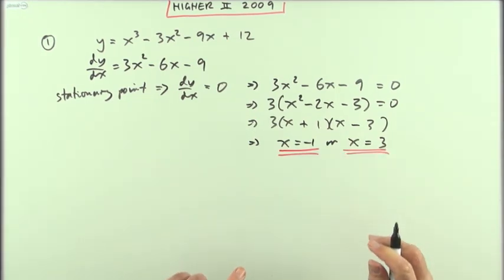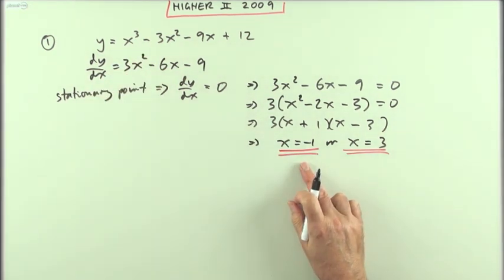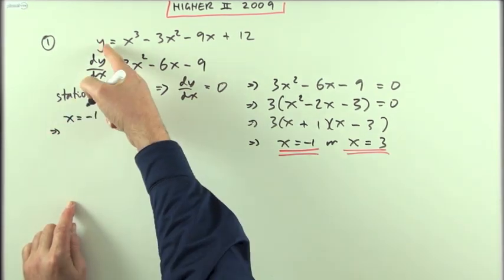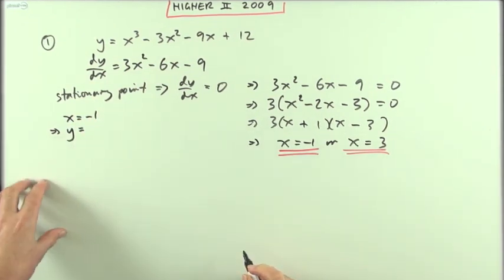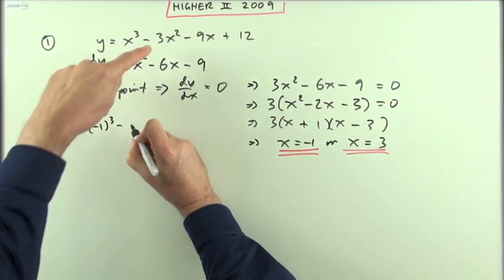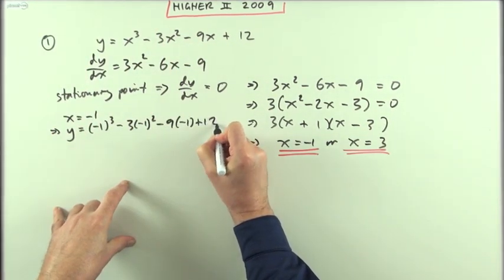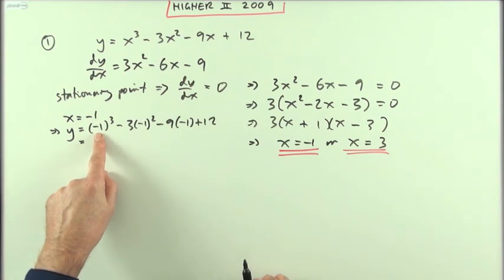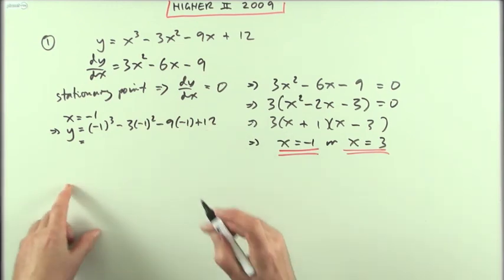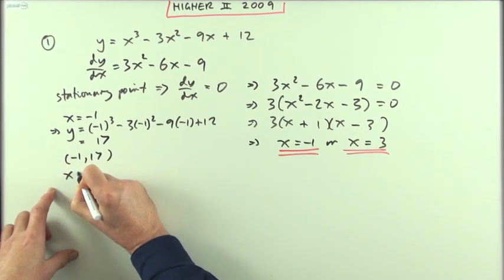It did say the stationary points, not just the x-coordinates, so I'll have to put those back into the equation to find the corresponding y-coordinates. If x = −1, using the original equation: (−1)³ − 3(−1)² − 9(−1) + 12 = −1 − 3 + 9 + 12 = 17. So one of the points is at (−1, 17).